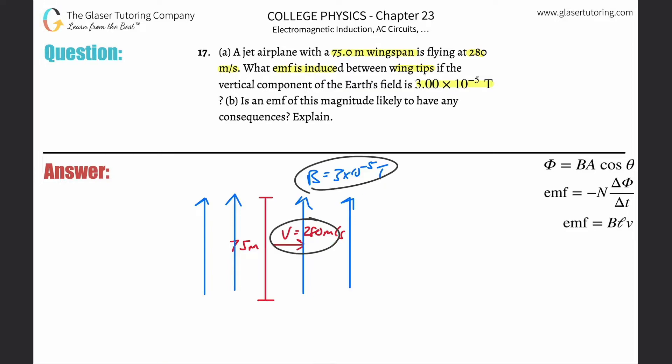And that object is now going to experience an induced EMF, and that induced EMF can be simply calculated by the following equation where it says the external magnetic field will be multiplied by the length of the particular rod that's moving through that field, in this case it's the wingspan, multiplied by the velocity of that moving rod.